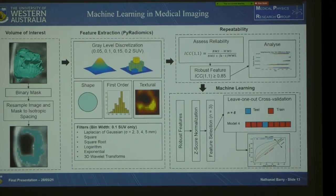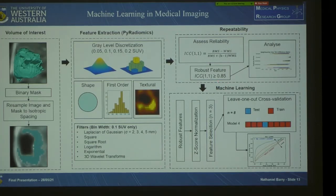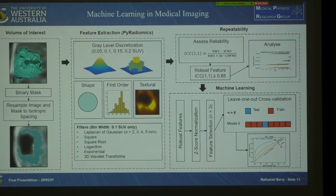To define a feature as repeatable, we use the intraclass correlation coefficient (ICC) with a one-way random effects model. An ICC of one demonstrates perfect repeatability, and for our analysis we define a robust feature as having an ICC greater than or equal to 0.85. The robust features then undergo z-score normalization to prevent certain features from having greater weight in classifiers, followed by a final feature selection restricting the final number to three. Every model is evaluated using leave-one-out cross-validation, and for each run we calculate the area under the receiver operating characteristic curve, with the model with the highest AUC being our best performing model.